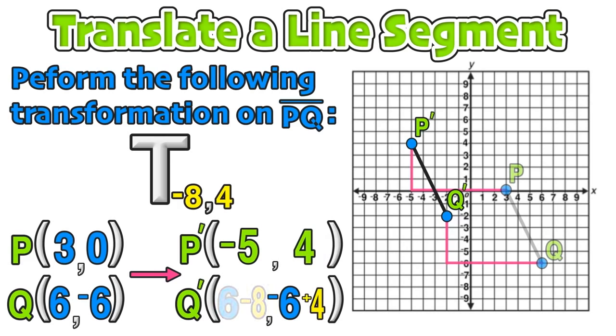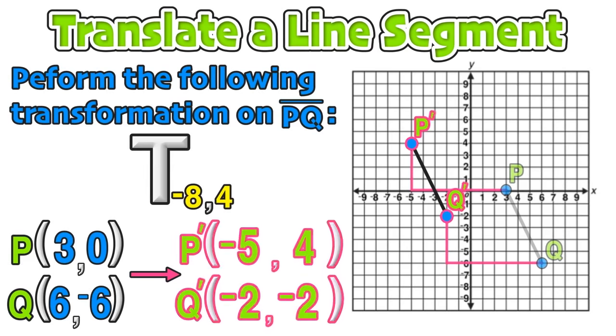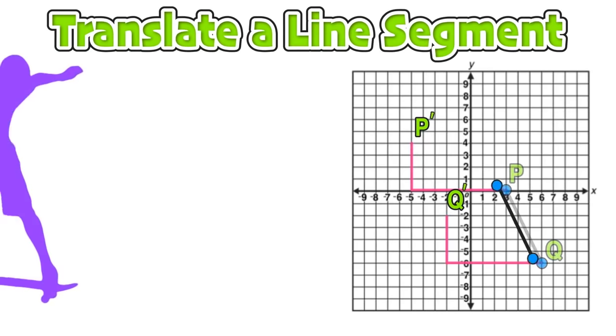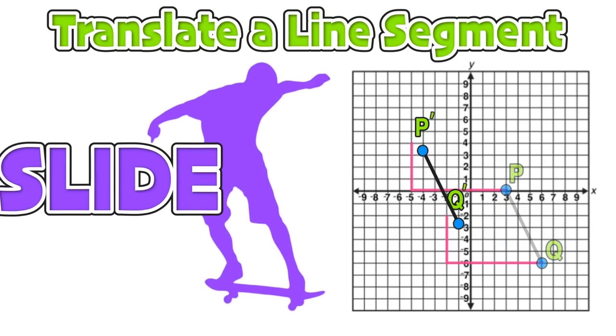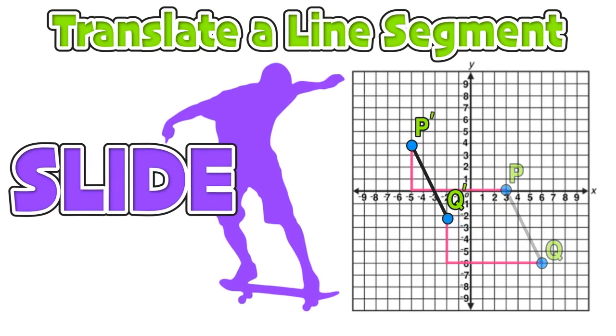And the final coordinate, negative six plus four, is equal to negative two. Notice that these points correspond with our graph for the image of line segment P prime Q prime. Now we can visualize and conceptualize just what it means for a line segment to be translated by sliding it from one location on the coordinate plane to another.